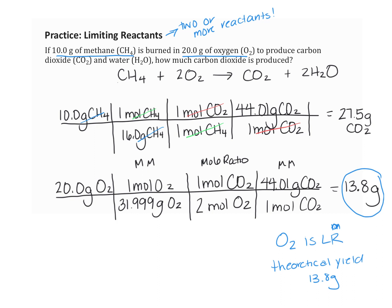Just because theoretically we should make 13.8 grams doesn't always mean in the lab we do. Sometimes we lose material — it may be filtered out, bubble away as a gas, or the reaction may not go to 100% completion. A helpful calculation for the lab is percent yield.